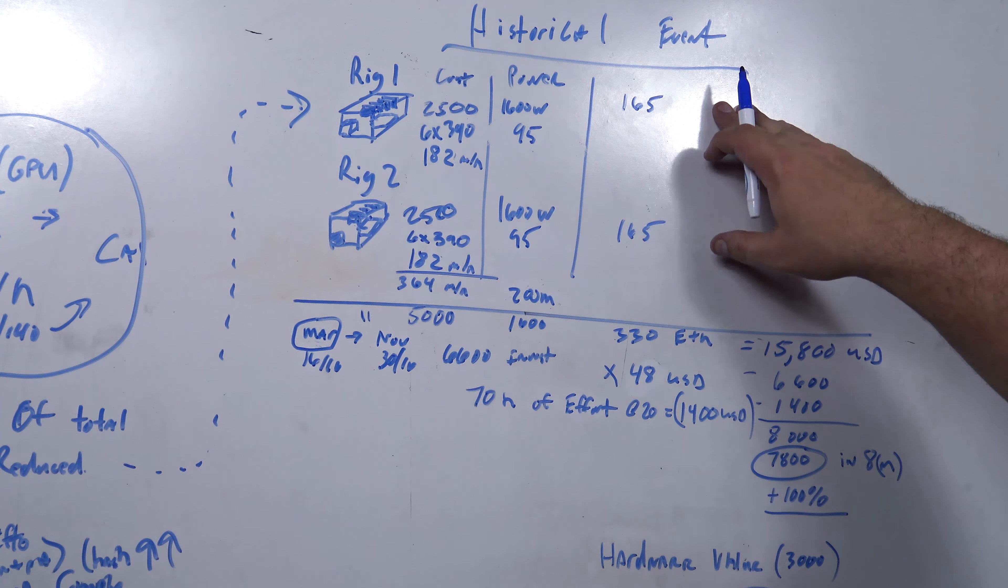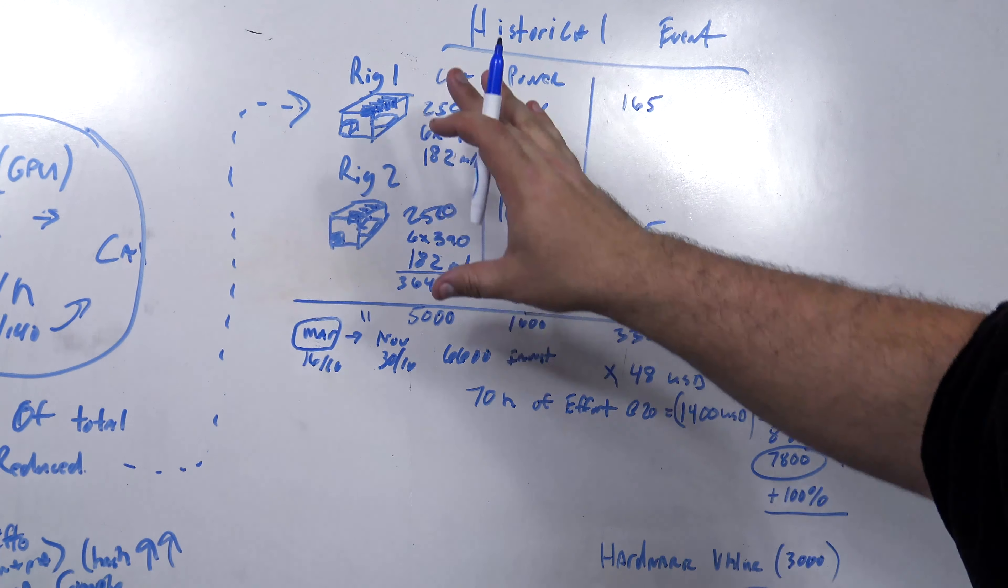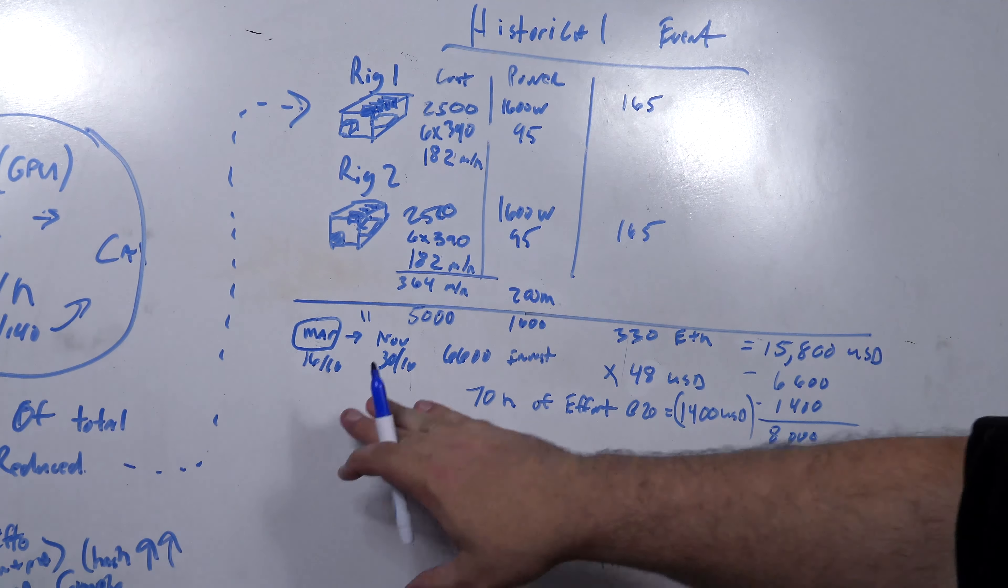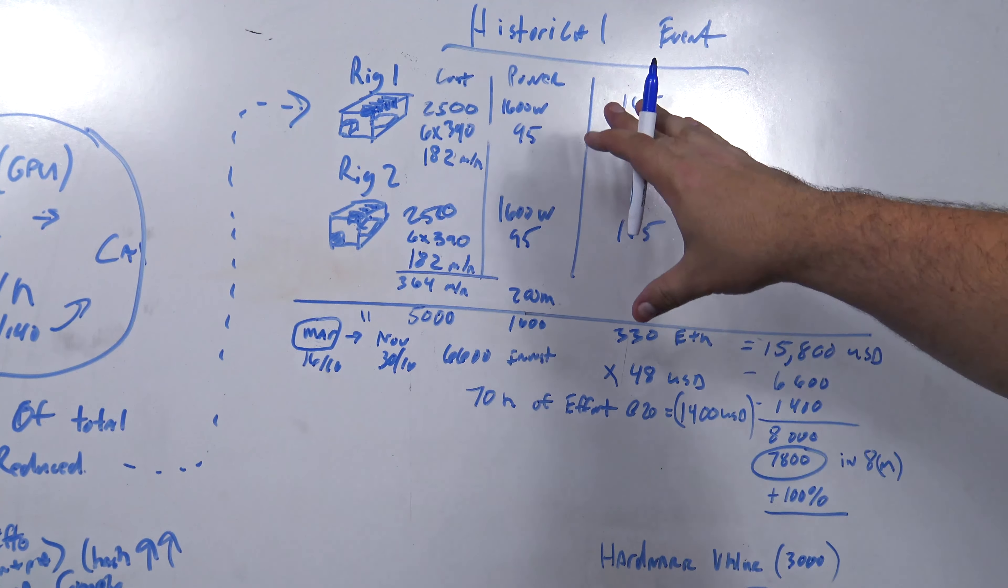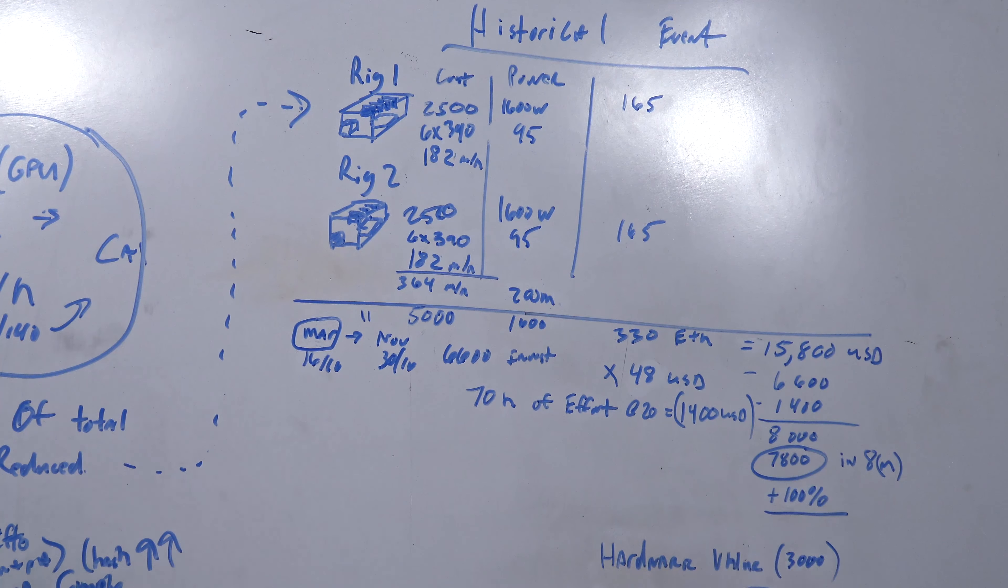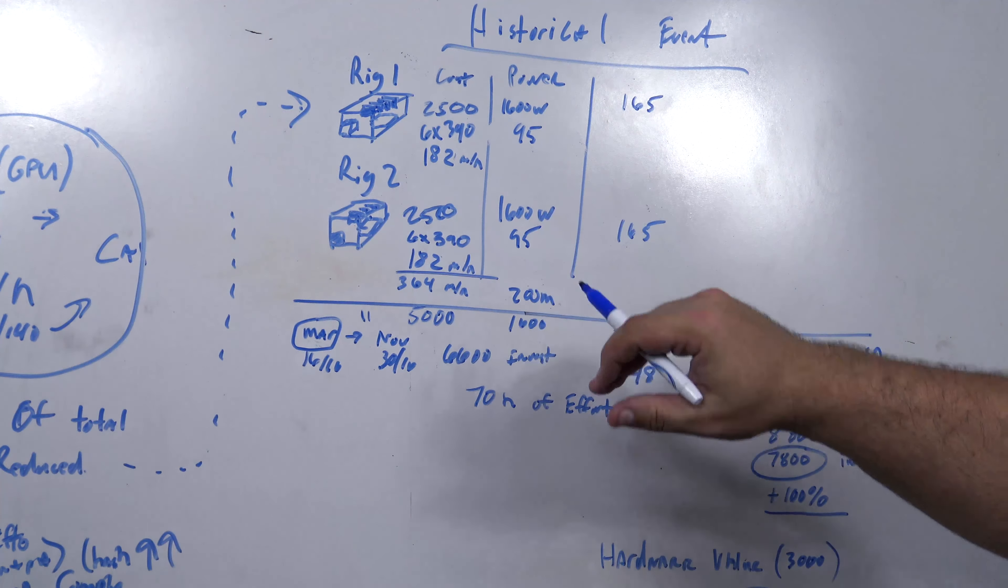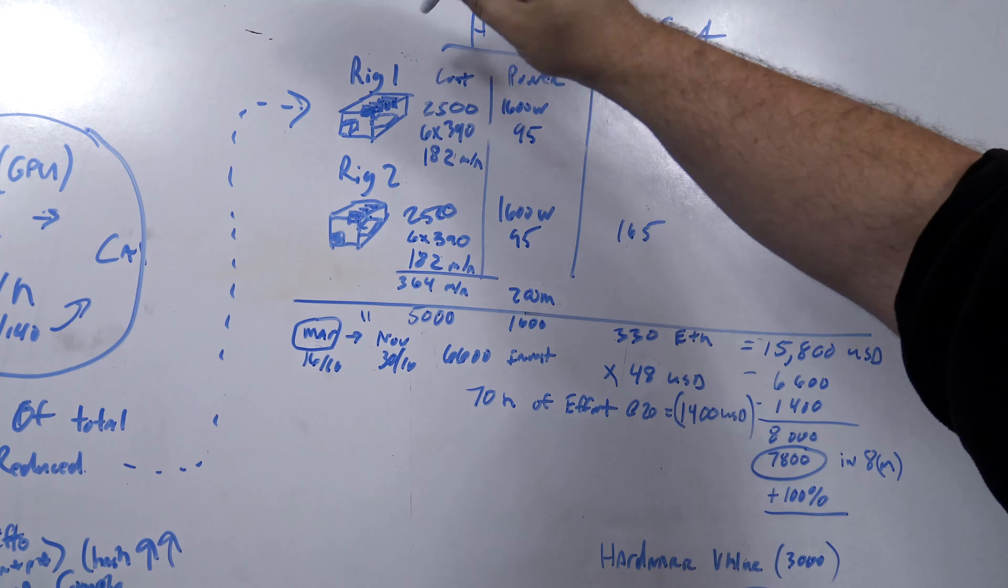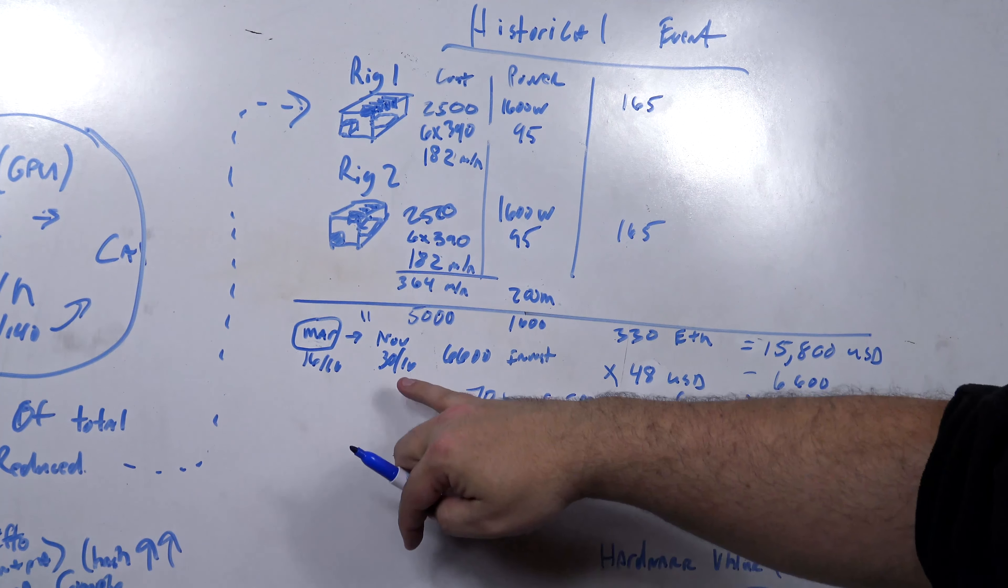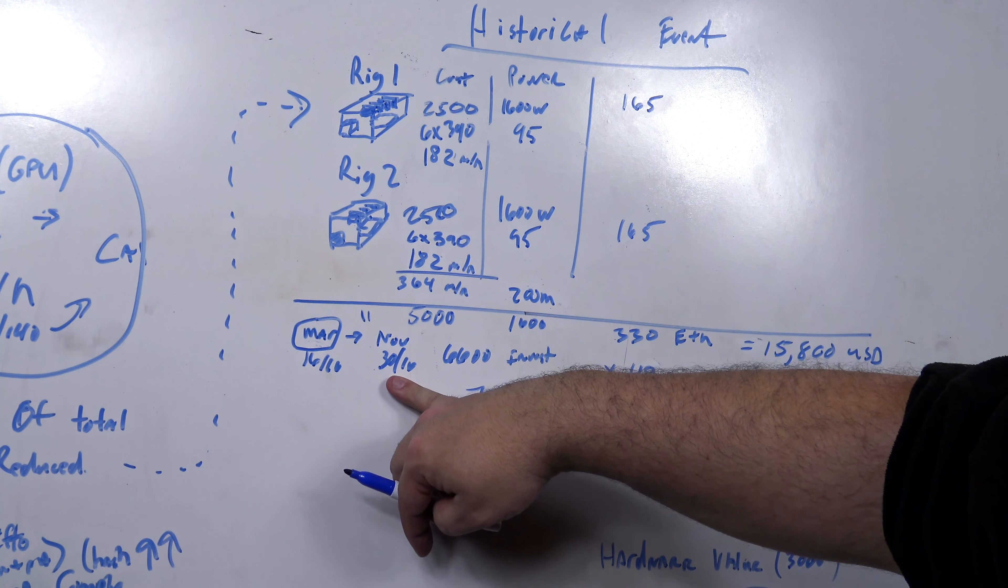We're going to go through a historical event that occurred with a couple rigs. I want to give you guys an example, a real life, no kidding, time cost payment output over a period of time. A real scenario that has happened. Essentially March 16th of 2016 through November 30th, 2016.